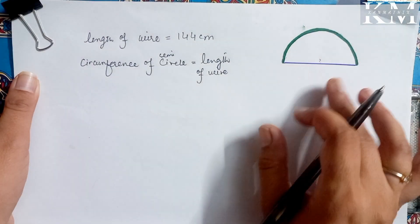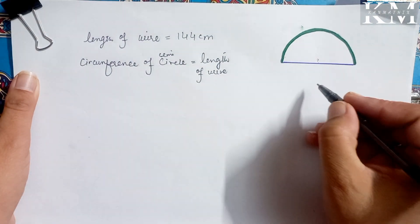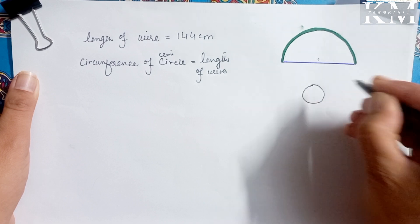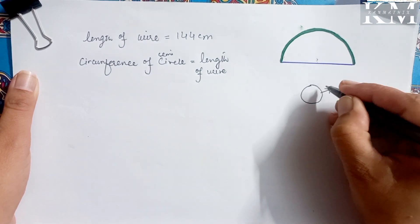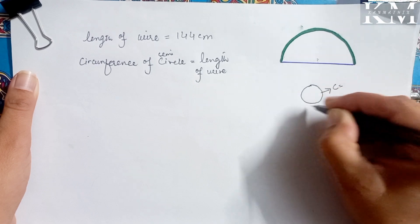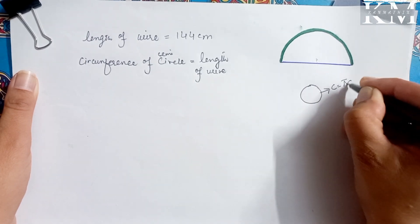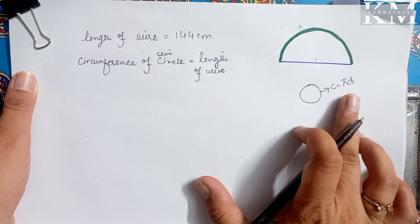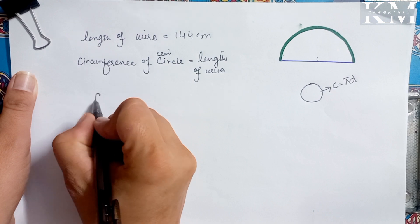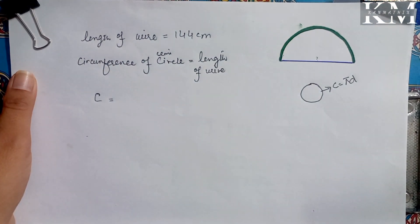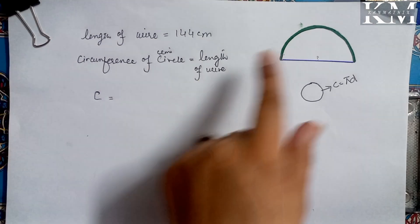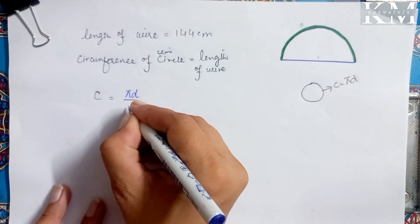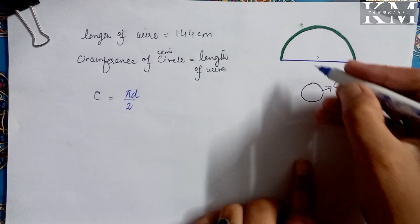Now we have to find the diameter. We will make a formula to find the diameter. As you know the properties of a circle — the circumference of a circle, i.e., its boundary, is equal to πd in terms of diameter. Now since this is a semi-circle, meaning half circle, the circumference will be half, so we will write it as πd/2.